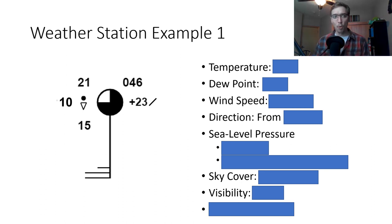So here's our first example, Weather Station Example 1. As far as numbers go, we see from the left side, top to bottom: 21, 10, and 15. On the right side: 046, and plus 23 with an increasing diagonal line. That last one there, that plus 23 is one we didn't necessarily mention, but I will explain what it is once we go through here. We see a filled in circle with a triangle on the left where the current weather conditions are, and we see a barb pointing to the south with two long and one short flag. And then we see a three quarters colored in circle. So go ahead and pause now and try and get all of these different things.